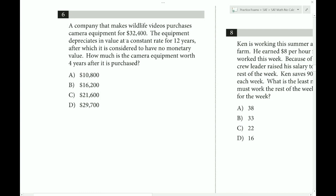A company that makes wildlife videos purchases camera equipment for this. The equipment depreciates in value at a constant rate for 12 years, after which it's considered to have no monetary value. How much is the camera equipment worth 4 years after it's purchased? Well, let's see. So normally, when we think of depreciation, we think of that in terms of an exponential decay. So we think of it in terms of a multiplier, which would cause this sort of ever-decreasing but never quite reaching 0 behavior. But in this case, actually, this is not what we're going to see. We know that because we know it's worth 0 at 12 years. So we know that this is more of a linear situation, because otherwise we would never be able to reach a value of 0.